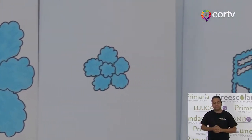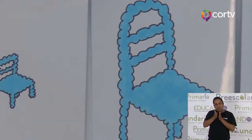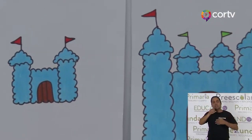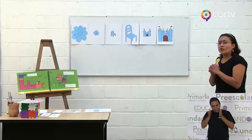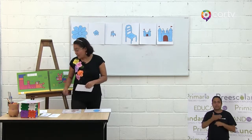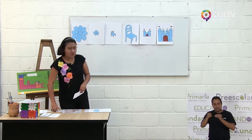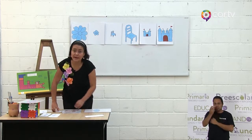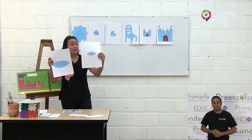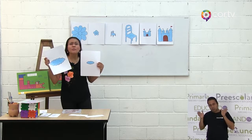Tenemos florezota, florecita, sillita, sillota, castillito y castillote. ¿Ya has escrito los nombres de estas figuras? Muy bien. Vamos a ver si coinciden con los que yo he escrito. Nos hacen falta dos imágenes: la nube grande y la nube pequeña. ¿Cómo decimos nube grande con apoyo del aumentativo?